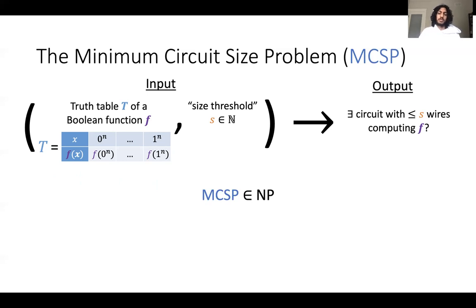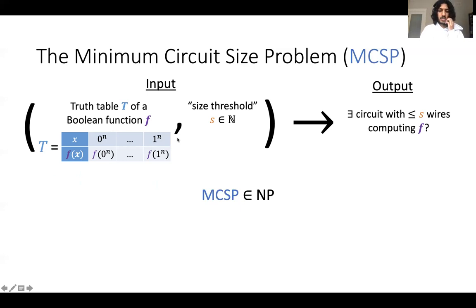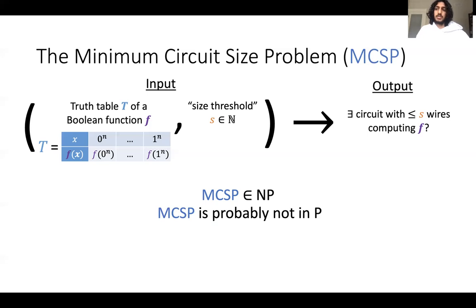The output of the problem is: does there exist a circuit with at most s wires computing this function? One thing that should be relatively easy to observe is that MCSP is in NP — you can witness a yes instance by handing over a circuit and checking that it has at most s wires and computes the function correctly. On the other hand, we know MCSP is probably not in P: if one-way functions exist, this problem cannot be easy. This sets up the question of whether MCSP is NP-hard.